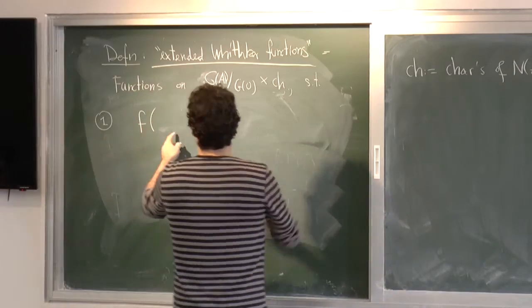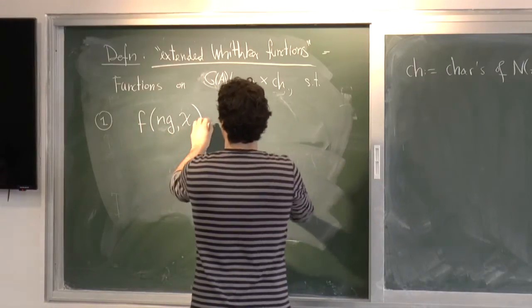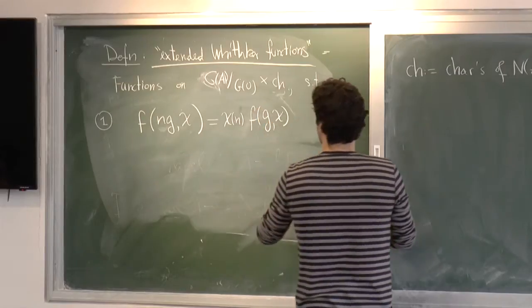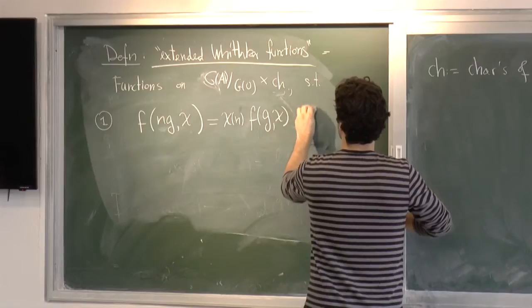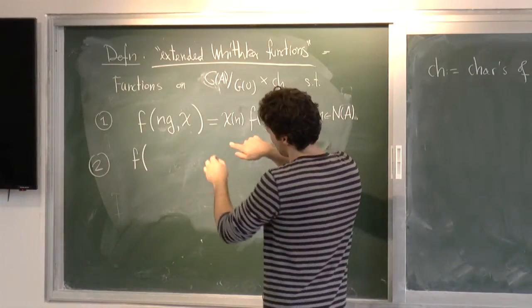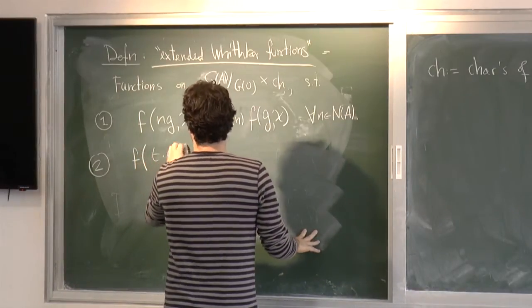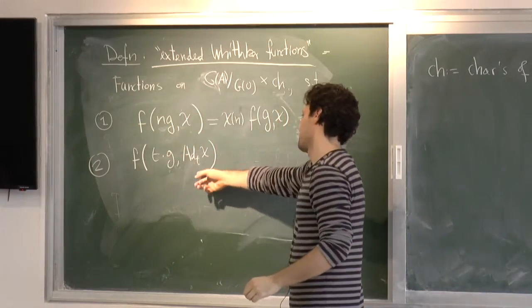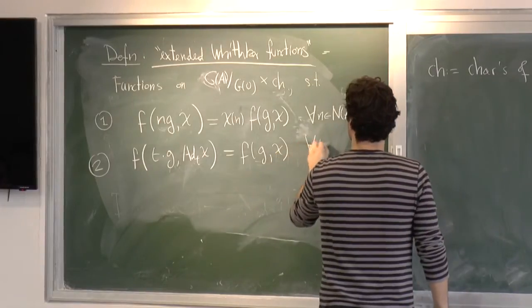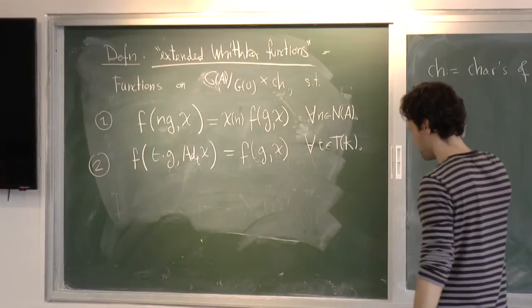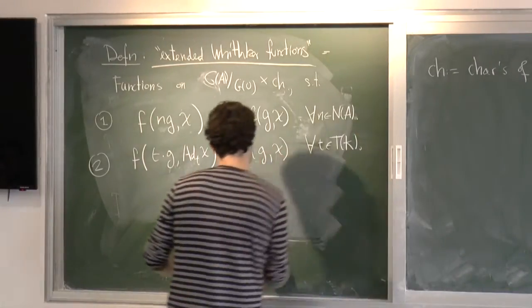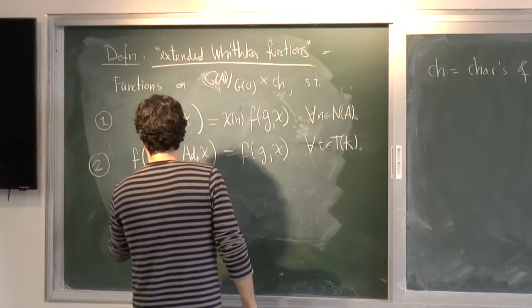So I'm unwinding what I did in order to have, instead of a product, I want to have just one thing. And for that, I insert characters in the domain. So such that one is, so now it's a function that takes two inputs. So a function like that is equal to, now evaluate N with a character. You get a number. Put it here. Put it out. That's for any N in N of A. N two.